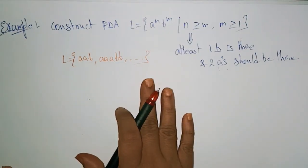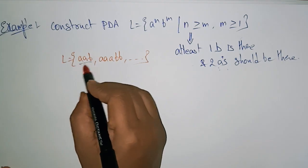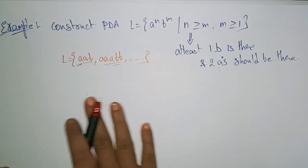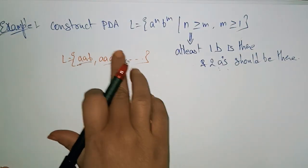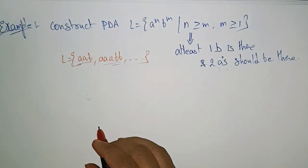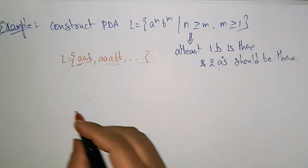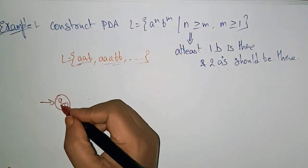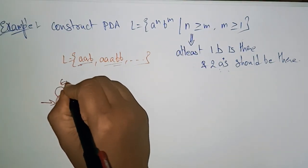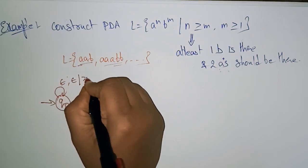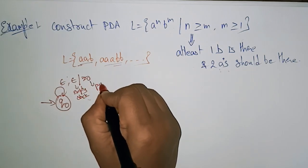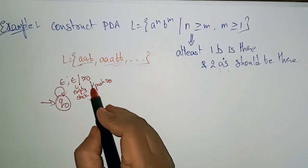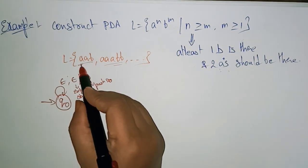Let's start the transition diagram. I need to construct the pushdown automata for this. Whatever string you take, it has to satisfy the complete language. If the stack is empty, place Z0 in the stack to indicate the stack is empty. Starting state is q0 — this is an empty state. We push Z0 onto the empty stack.